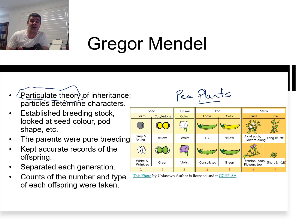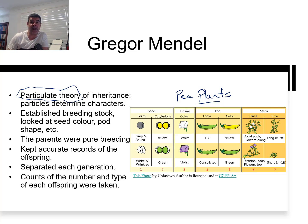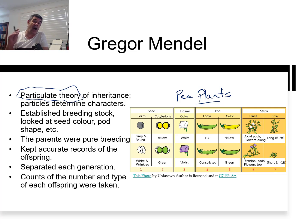Mendel looked at lots of different characteristics of the pea plants. The seeds themselves could be nice and round or slightly wrinkled, and they could be yellow or green. The color of the flowers could be white or purple. The pods that the peas sit inside could have a full or constricted form, and also be yellow or green. He also looked at the height of the plants — tall or short — and aspects about the flowers in terms of whether they're axial or terminal.